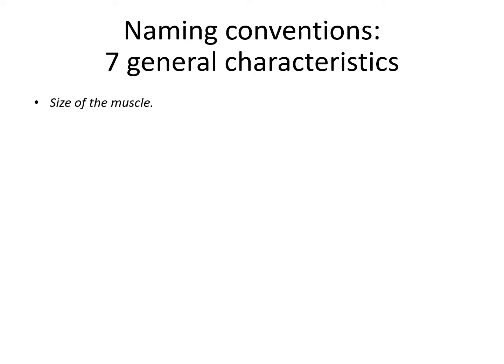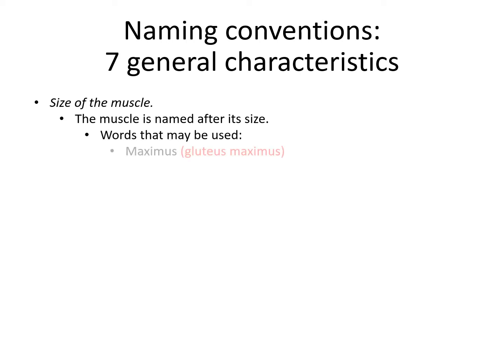The size of the muscle is also a naming convention — the muscle is named after its size. Maximus refers to a really large muscle; the gluteus maximus is a really large muscle, as opposed to the gluteus minimus, which is a much smaller muscle in the same general area. Vastus similarly means really big — the vastus lateralis is one of the quadriceps muscles, a really big muscle at the anterior portion of your thigh. Magnus is yet another term for large — the adductor magnus is one of the muscles on the medial portion of your thigh that brings your leg back to the midline.